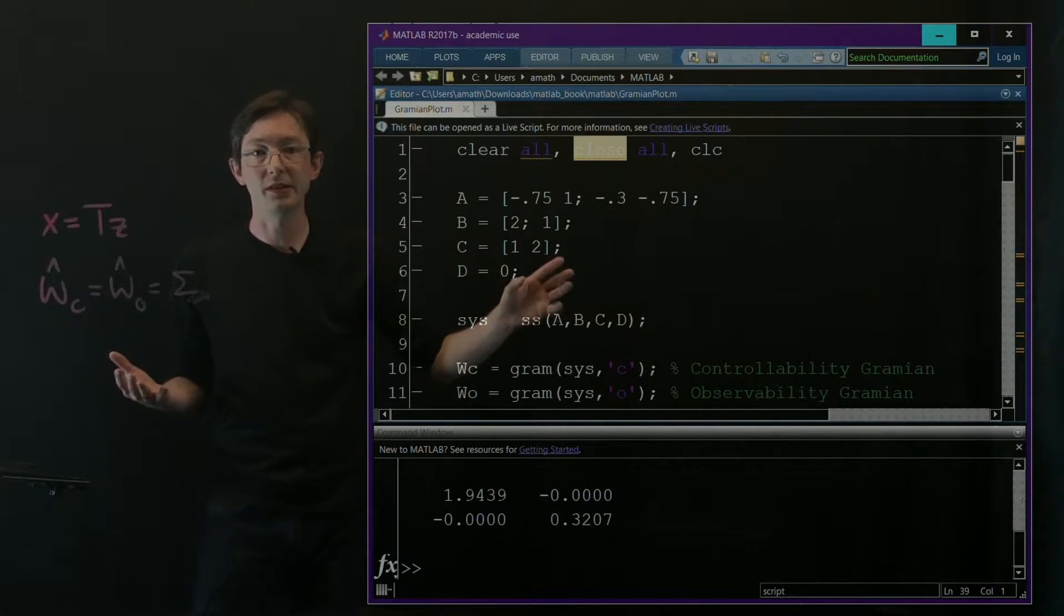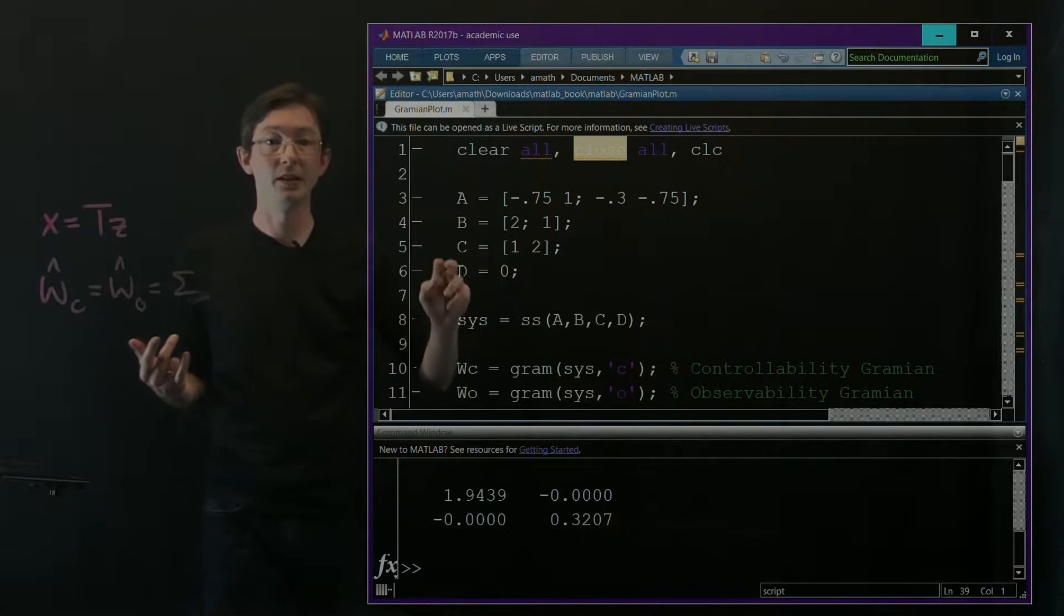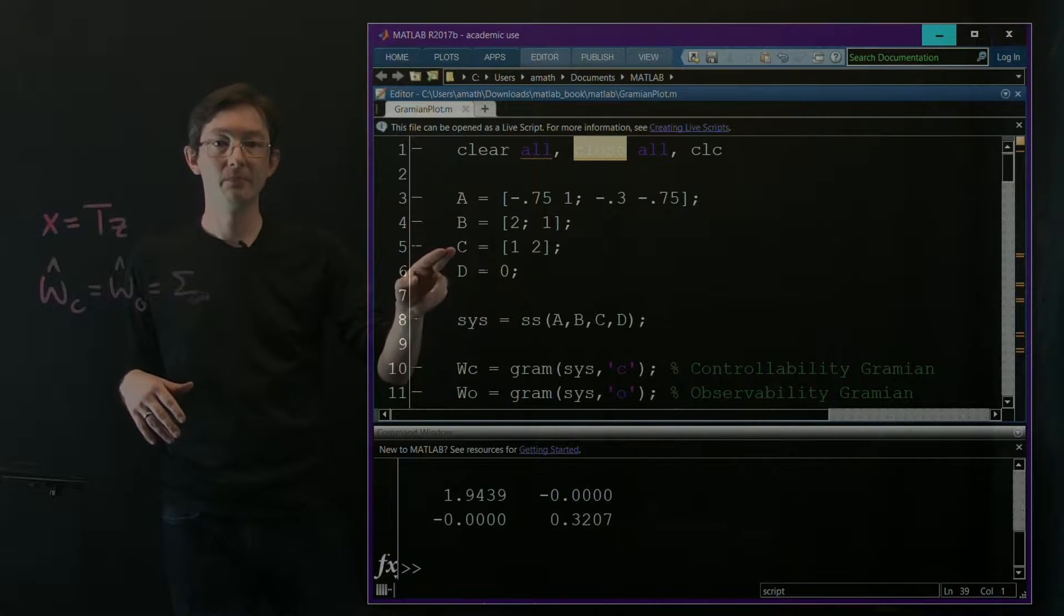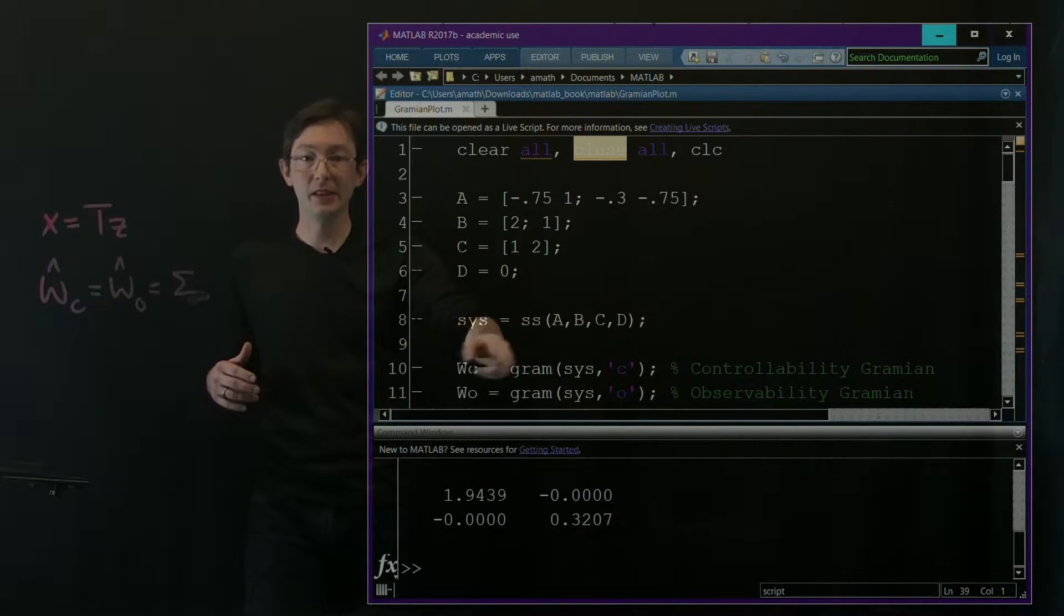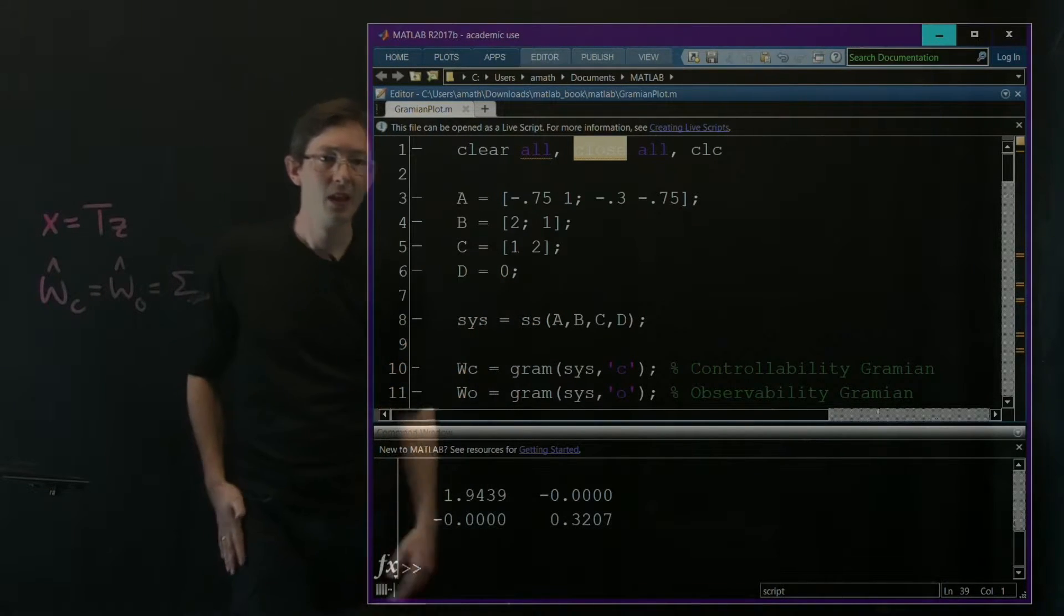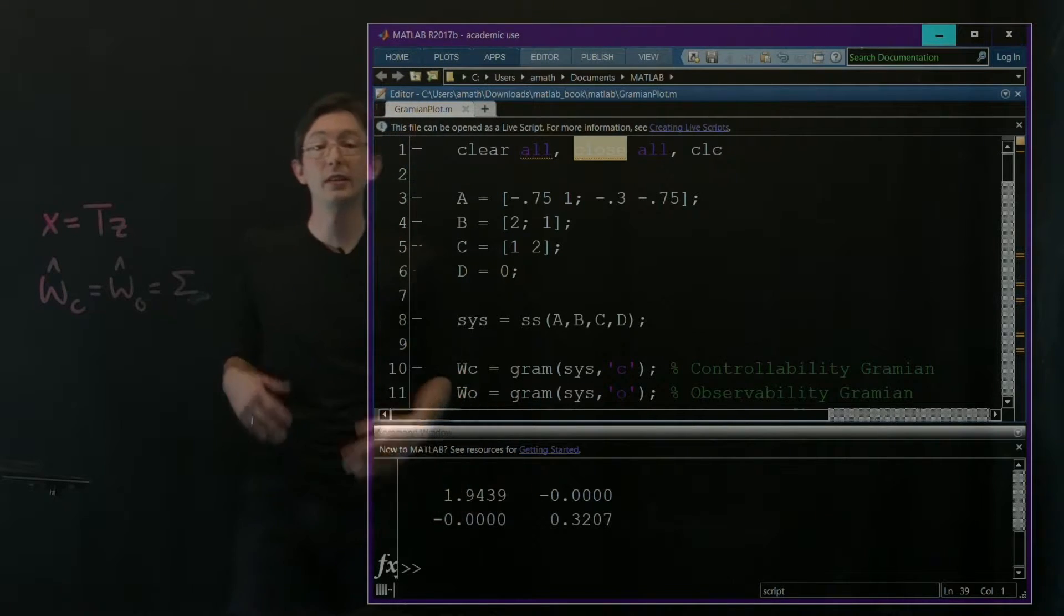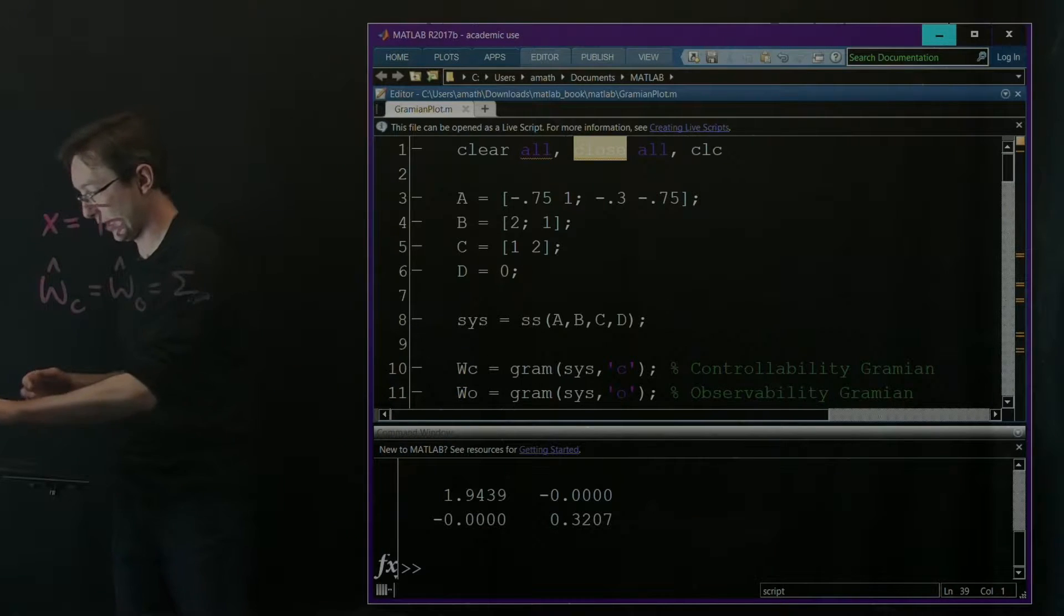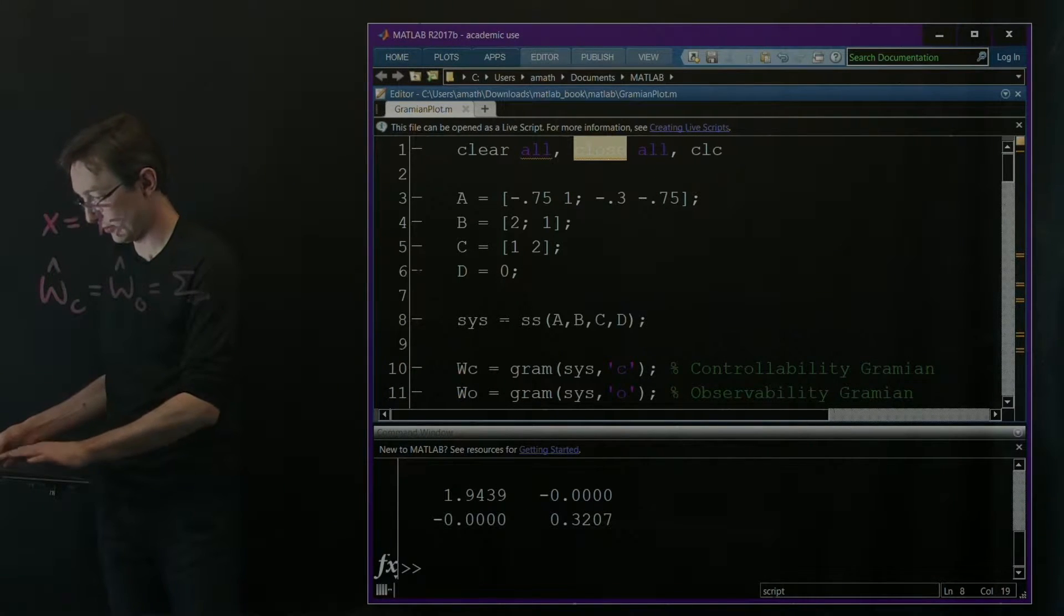So here's what we're going to do. We're just going to cook up a system, a two-by-two system with one input and one output, no D matrix, no feed-through term, so an A, B, and C matrix. In MATLAB, it's easy to build a state-space system with the SS command, so we're going to build a state-space system, and I'm going to look at what the controllability and observability Gramians are using this convenient Gram command. I'm just going to run all of this. Control-Enter.